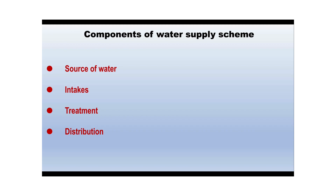After treatment, the water is going to be distributed. This distribution involves different types of layouts: gravity, direct pumping, and pumping with storage. These are the components of the water supply scheme.